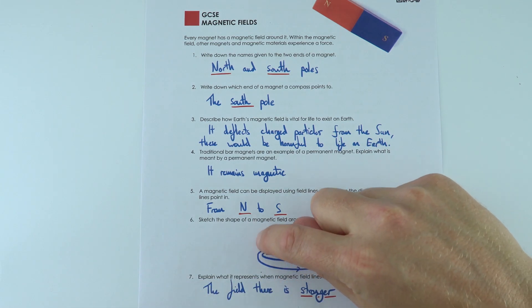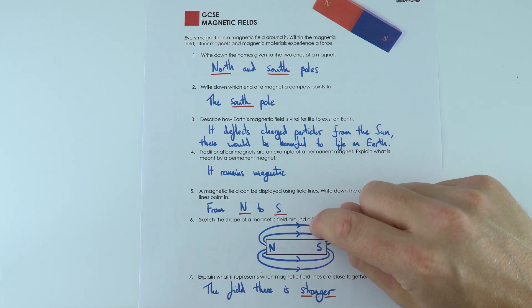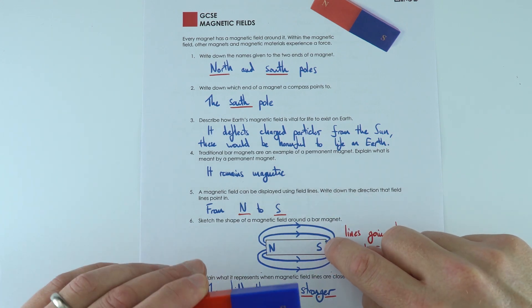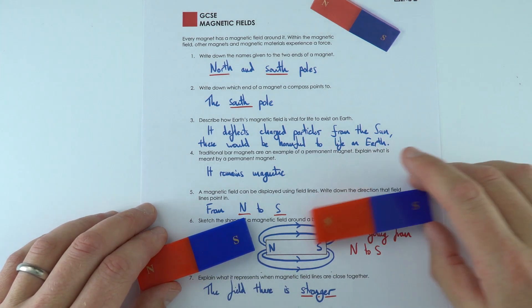And they always go from north and we put an arrow so they point to south. So I've tried to draw this with this side being similar to this side. And when you've got the field lines closer together, that's where that magnet is strongest.